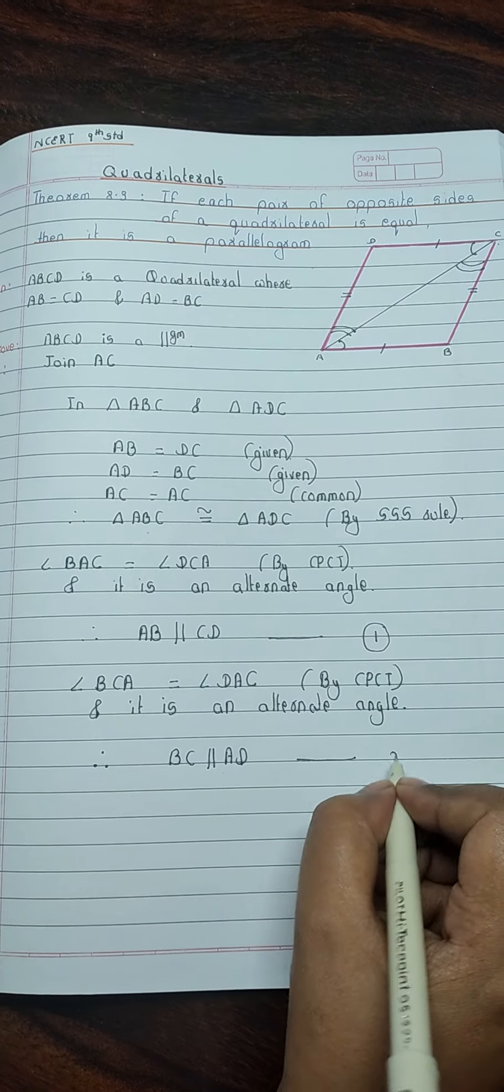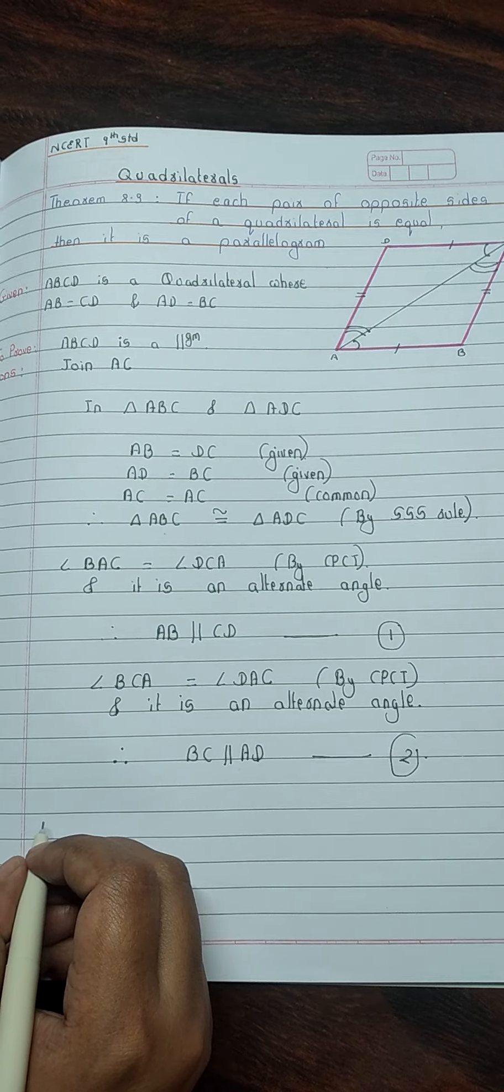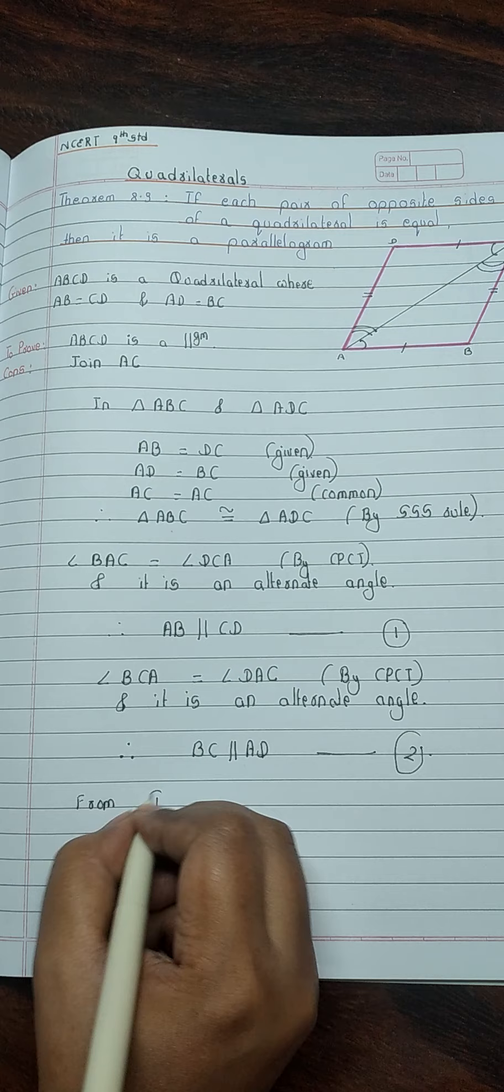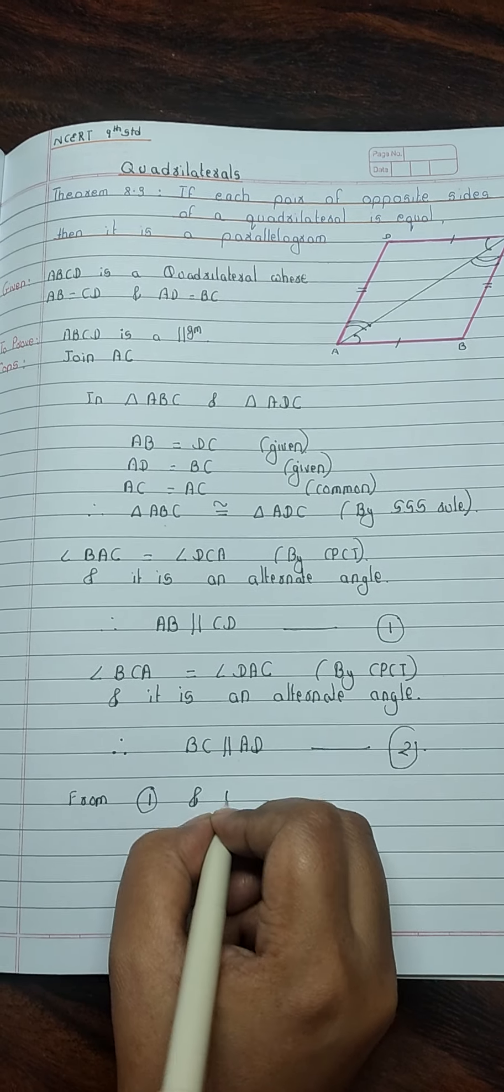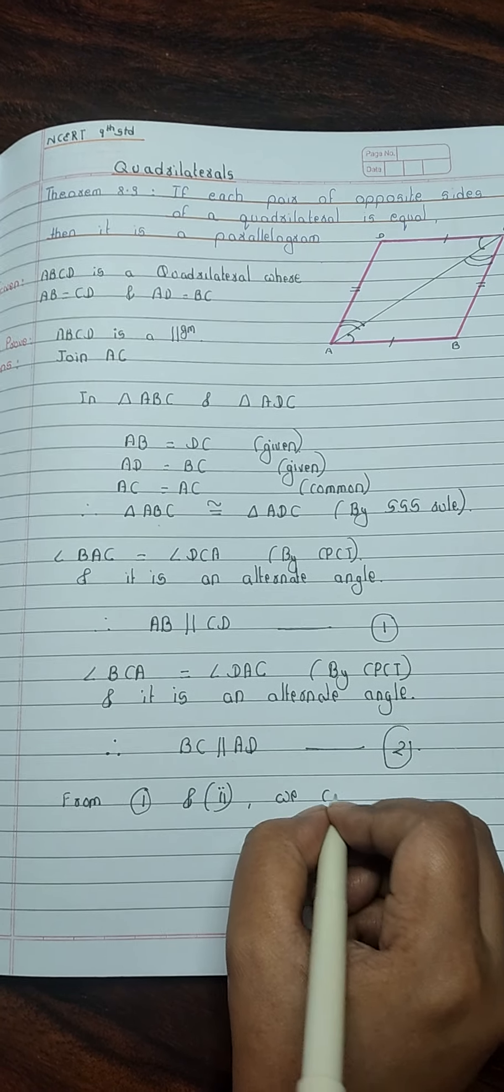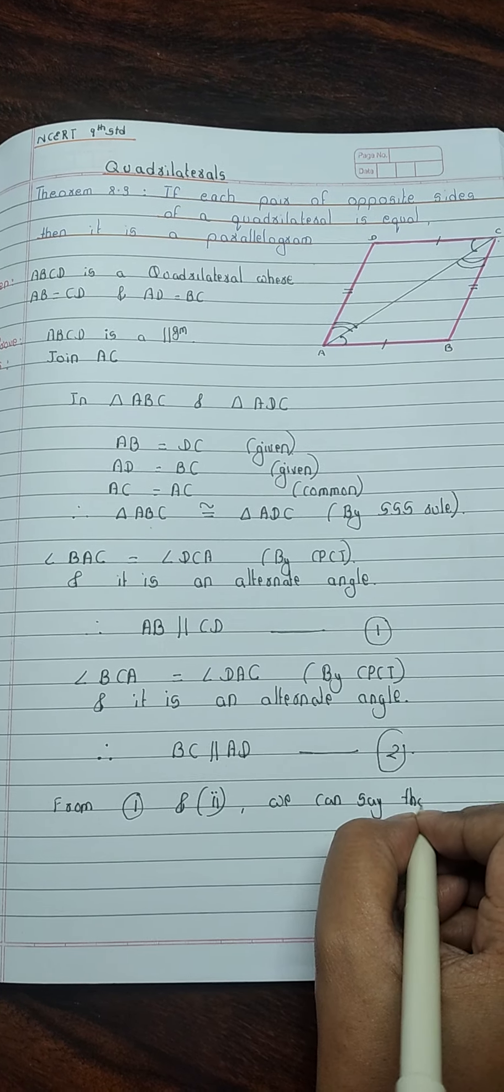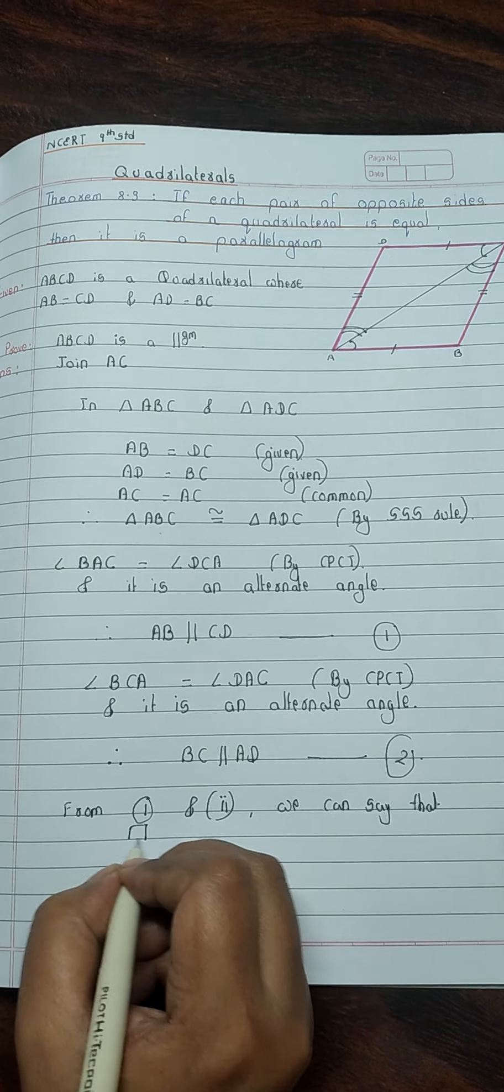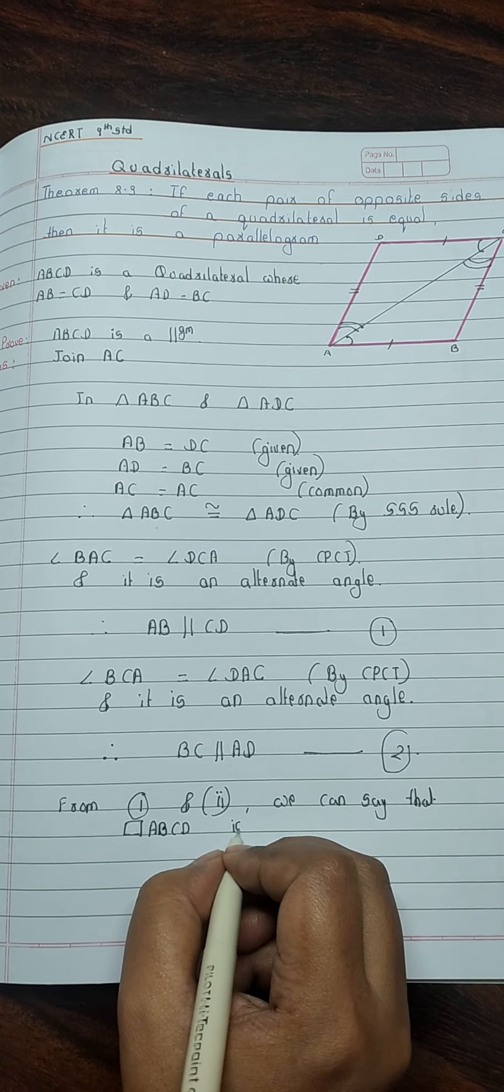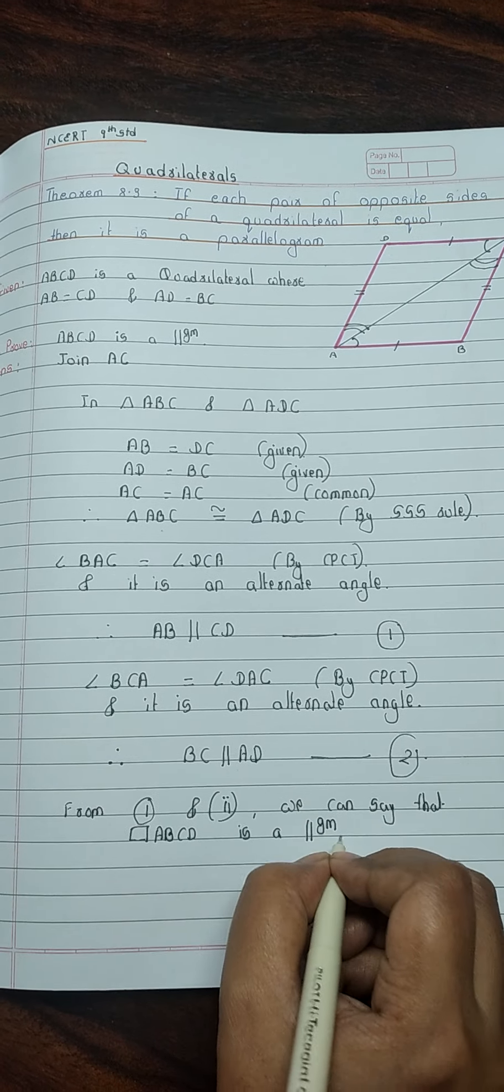From 1st and 2nd, we can say that ABCD is a parallelogram. Hence proved.